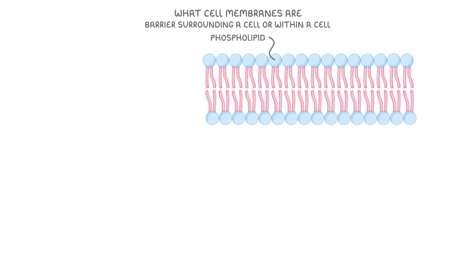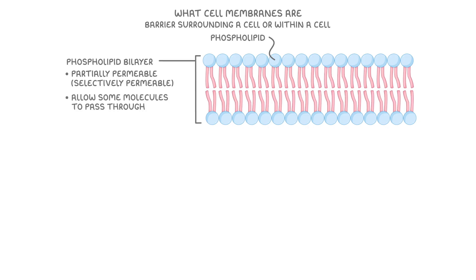Let's begin by looking at what cell membranes are. The term cell membrane basically refers to any barrier surrounding a cell or within a cell, separating the space on the inside of the membrane from the space on the outside. Membranes always contain phospholipids that arrange themselves into a phospholipid bilayer — two layers of phospholipids — making the membrane partially permeable, or selectively permeable, so they allow some molecules to pass through but not others.